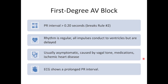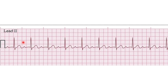A first-degree AV block is the mildest form of a heart block. The AV node is responsible for delaying the electrical signal between the atria and the ventricles, allowing the atria to fully contract and fill the ventricles with blood. In a first-degree heart block, there's just a slight delay in this conduction, but it doesn't prevent the signal from getting through — it's just slower than normal, giving us a PR interval greater than 0.2 seconds. Patients may be asymptomatic, and it's often caused by vagal tone issues, medications, or ischemic heart disease.